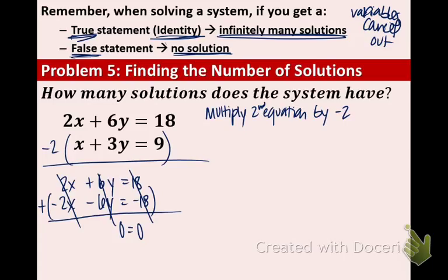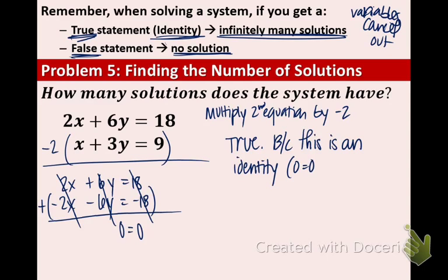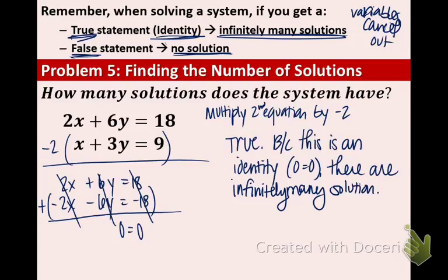So at first glance you may think to yourself, oh this is no solution. But actually, this is a true statement. This is an identity. So because this is an identity, aka 0 does equal 0, there are infinitely many solutions. And remember, that just means every single point on the line is a solution of both equations.